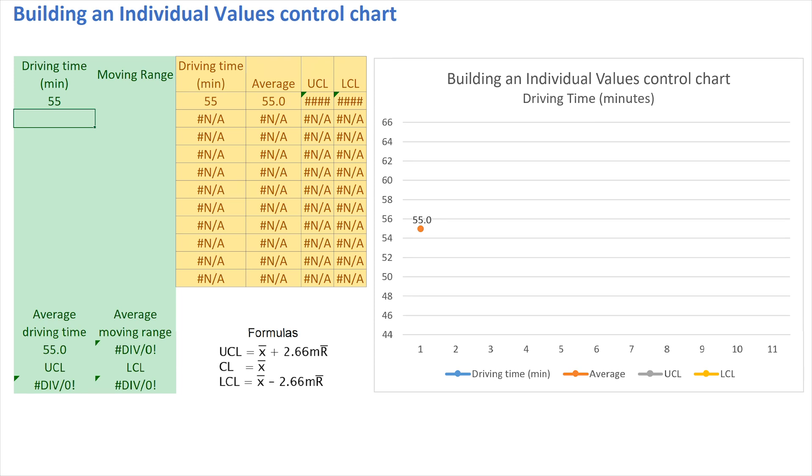As I enter the second value, you will see how the moving range is being calculated. The moving range is just the difference between 55 and 58, without paying any attention to the sign. That is, this is the absolute value of the difference between these two observations. If it's negative, it will be turned into positive. We're only interested in the actual dimensions.